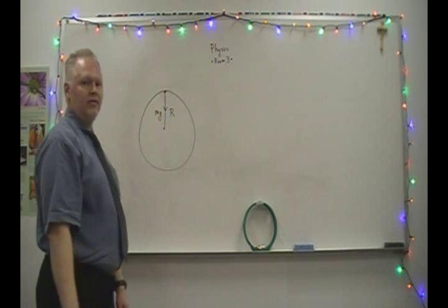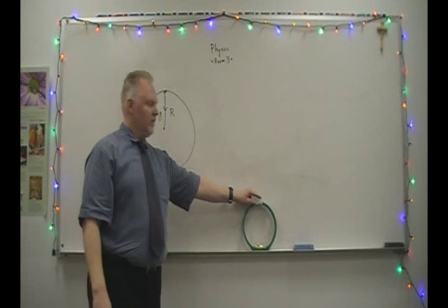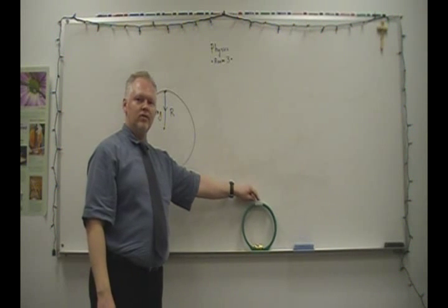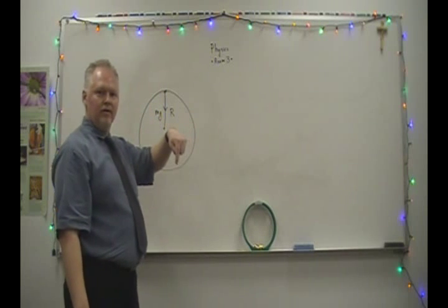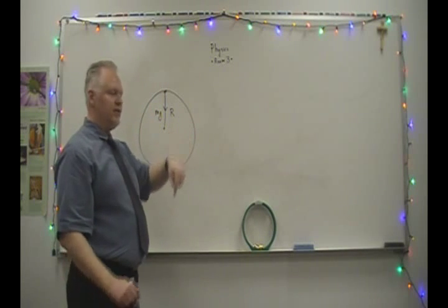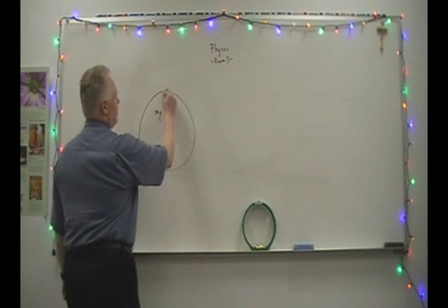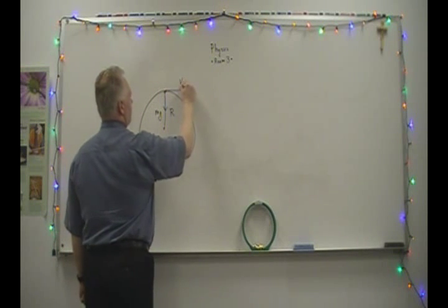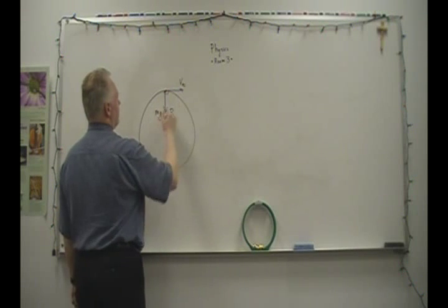There's another force on the car — it's the force that the surface here, the roadbed, exerts on the car. It's perpendicular to the surface and it pushes the car downward. It prevents the car from going off in a straight line because the car is moving at a tangential velocity, and these are perpendicular to each other.